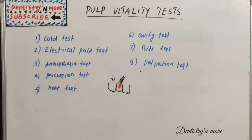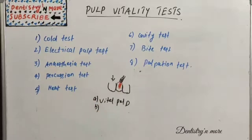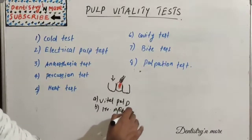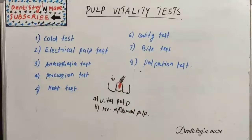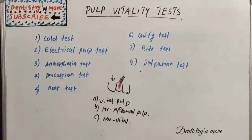There are three possible conditions with the cold test. First, the patient feels immediate pain lasting one to three seconds after removal of the ice stick — this indicates a vital pulp. Second, the patient feels immediate severe pain that lasts several minutes even after removal — this indicates an irreversibly inflamed pulp. Third, the patient feels nothing — this means the tooth is non-vital.